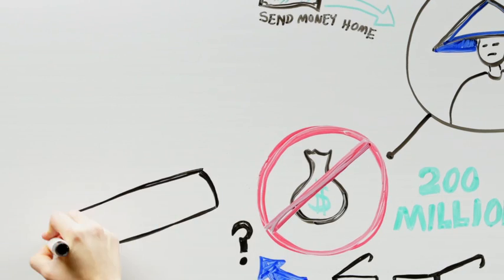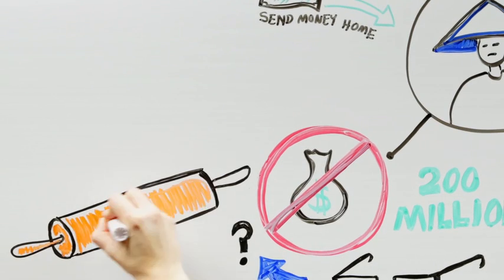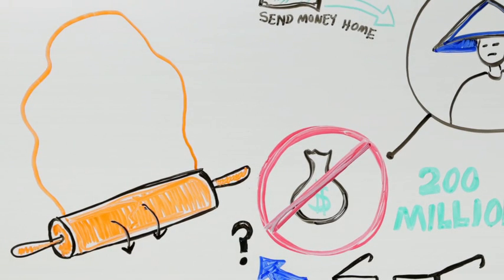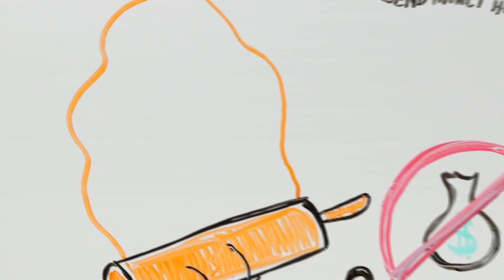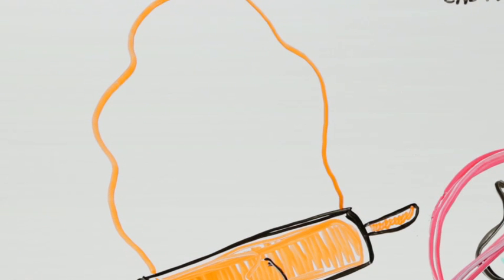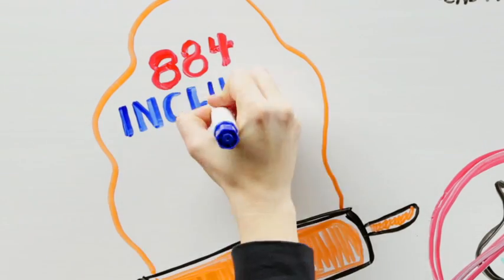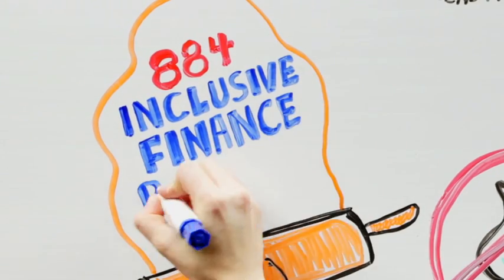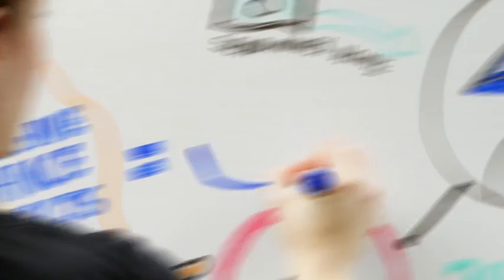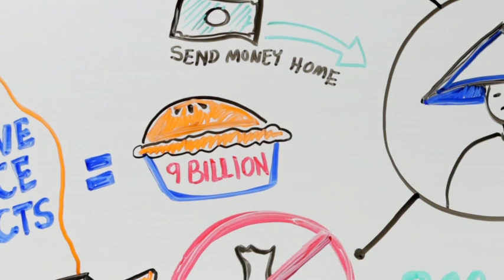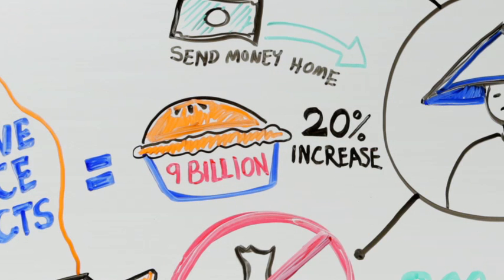To achieve these goals, the World Bank Group has rolled out a sizable financial inclusion program. Between fiscal year 2007 and fiscal year 2013, there have been 884 inclusive finance projects with a total commitment value of $9 billion, representing a 20% increase from previous years.